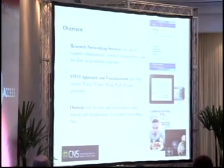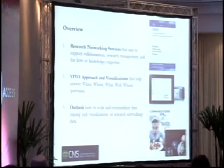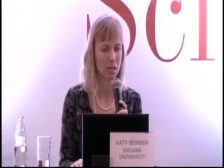In my talk, I wanted to give you a brief overview of the landscape of research networking services in the U.S. — it's a very U.S.-centric part — and then go over to VIVO, which is one of the research networking systems I'm more familiar with, where we helped add different visualizations that answer when, where, what, and with whom questions using temporal, topical, geospatial, and network analysis. And then, if there's time, I will provide an outlook on how to scale all this.